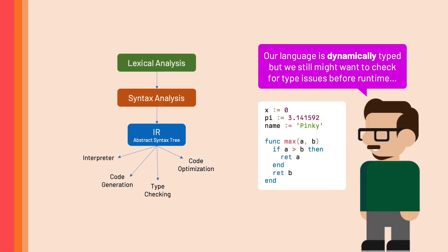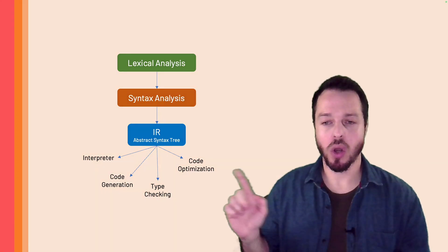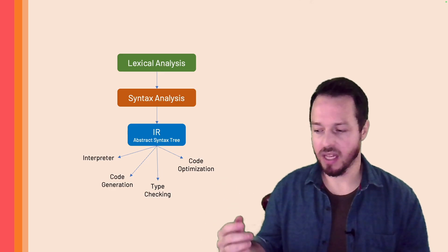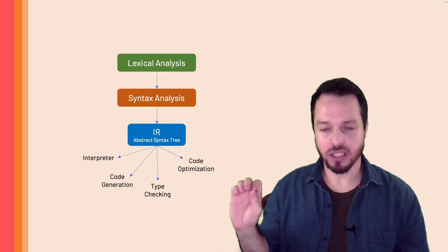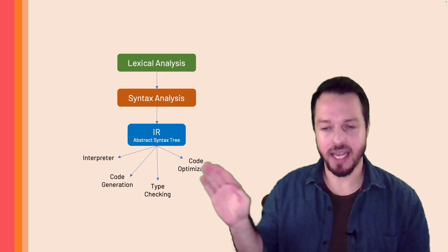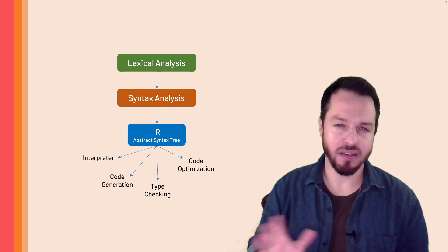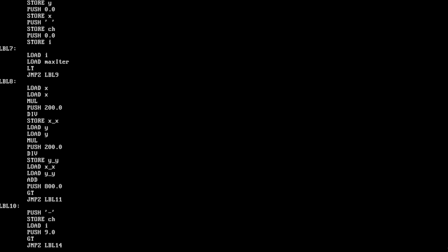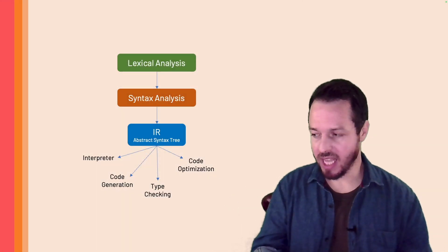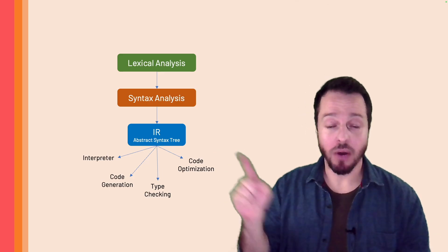Things like type checking — even though Pinky doesn't require declaring types ahead of time — can be performed based on the AST. Code optimization is also something we can run on top of the AST: things like constant folding, code reuse, and vectorization. And no, you don't have to generate an abstract syntax tree — there are several other techniques — but in our case we have enough memory to keep this abstract representation, so we'll use an AST.